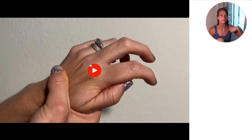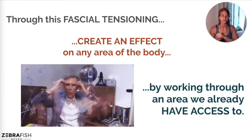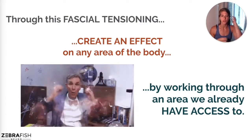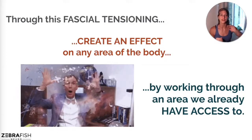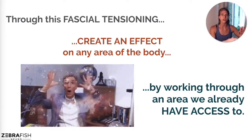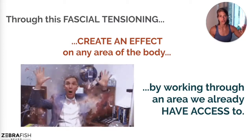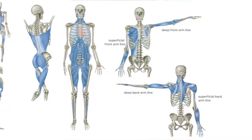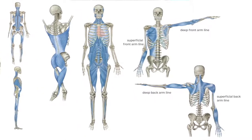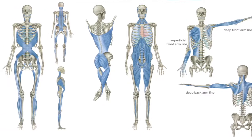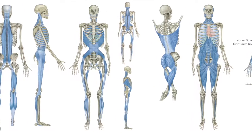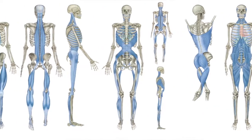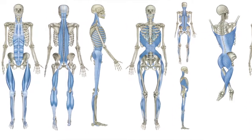This is a very localized example of how fascial tensioning works, but it happens all over the body. In theory, I could raise my eyebrows and influence the big toe on my foot through fascial tensioning. Through fascial tensioning, we can create an effect on any area of the body by working through an area we already have access to. The great thing about working through fascial chains, especially in SCI and paralysis recovery, is that it allows us to communicate all over the body outside of the traditional nervous system. You do not need a fully functioning spinal cord to take advantage of this fascial tensioning and communication network.